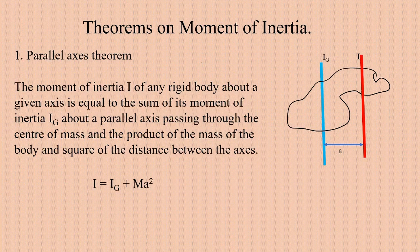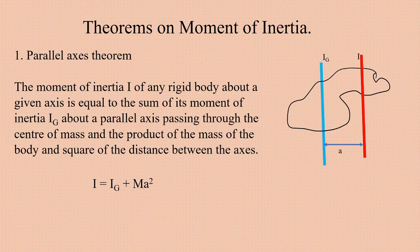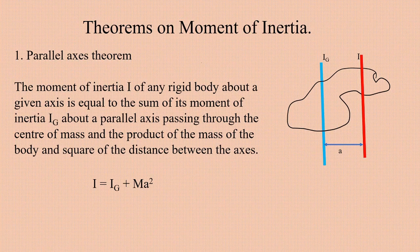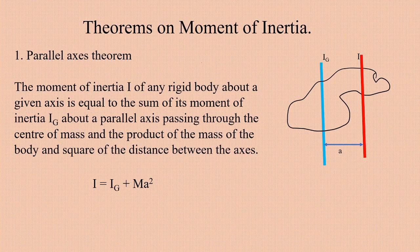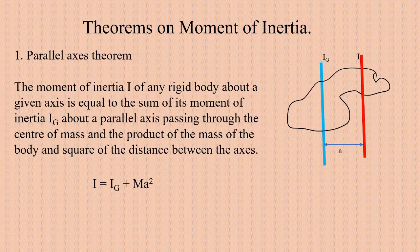Dear students, in order to simplify the calculation of moment of inertia of various rigid bodies, we can have two general theorems related to moment of inertia. These theorems are: one is the parallel axis theorem and the next one is the perpendicular axis theorem. We can go through these theorems.